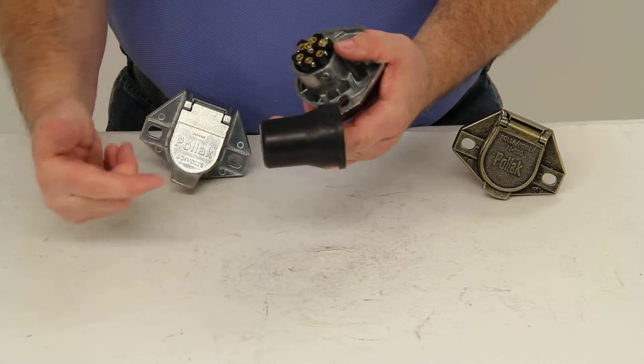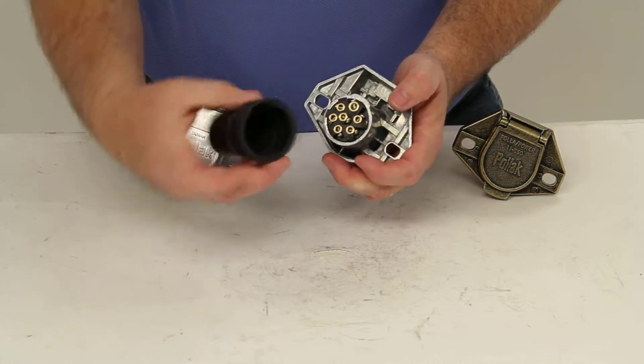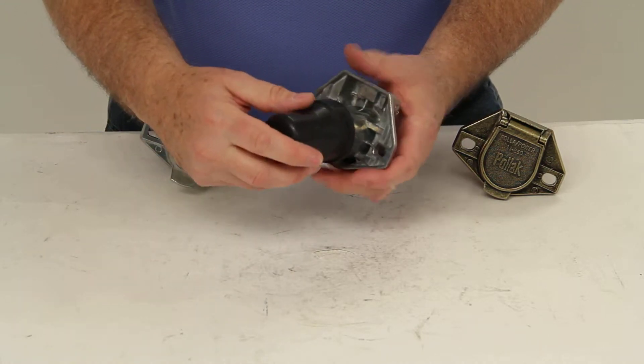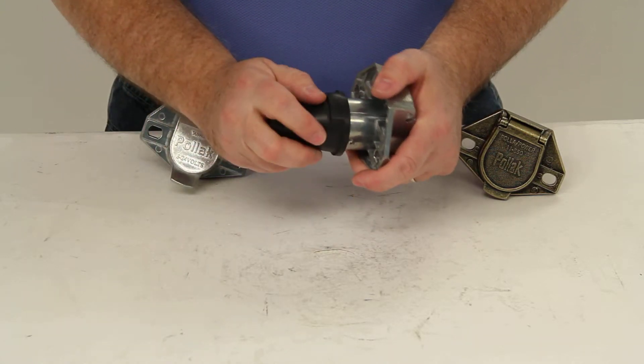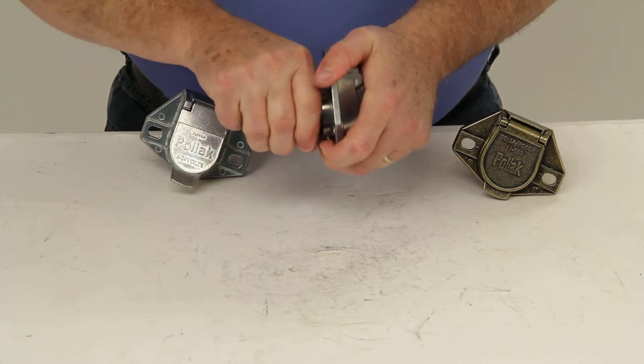So all you would do is run the wire again through here, pull it through, make your connections, slide this up over the wire connections, line up the cutout with the raised section, and slide it up as far as you can.